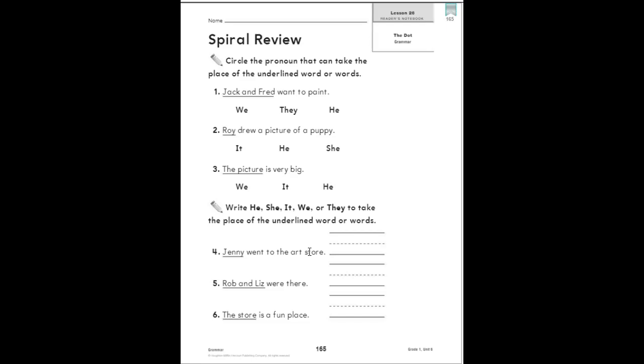We're talking about one, so it's going to be he, she, or it, and we know that Jenny is a girl. So I would use the pronoun she. You'd write it on the line, and then you can reread your sentence to make sure it makes sense. She went to the art store - that makes great sense.